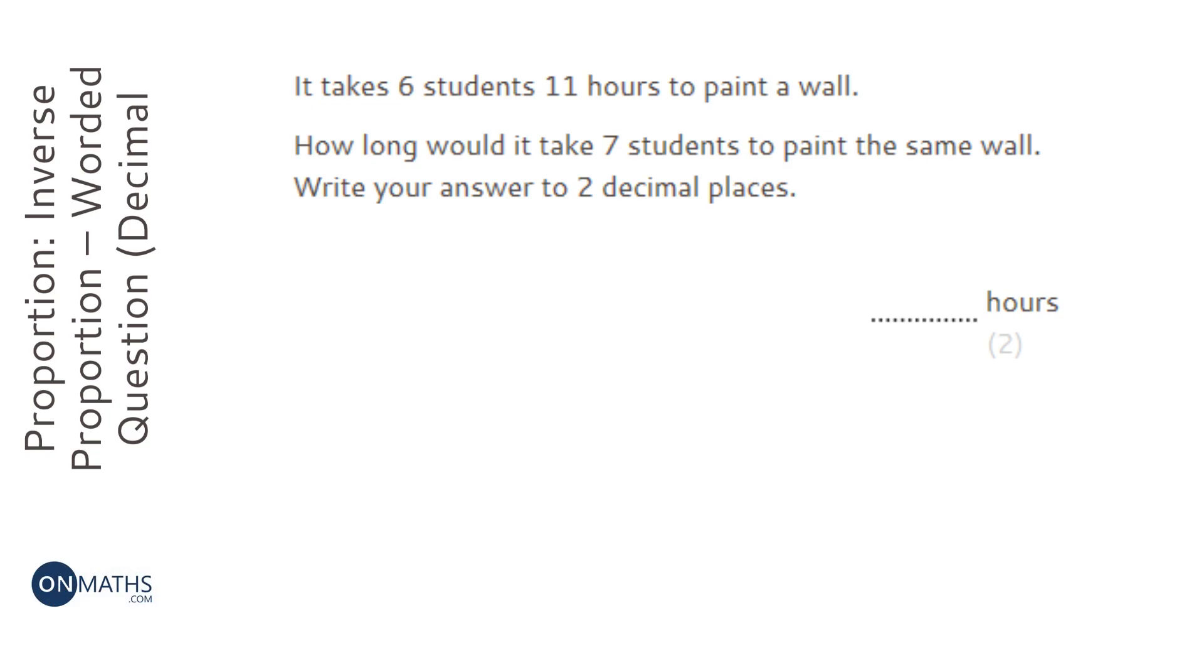So let's label the two things. We can have hours and students. Now H is inversely proportional to the amount of students you have, so H equals K, which is our constant, over S.